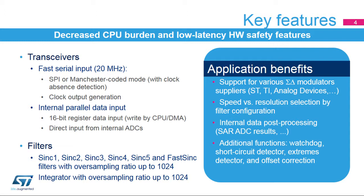Filters are at the core of the DF-SDM function. They perform 1-bit stream filtering to provide higher output resolution at lower speeds. There is an additional integrator behind the digital filter, which provides additional data averaging.